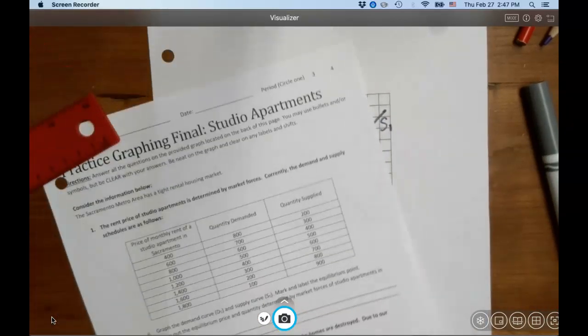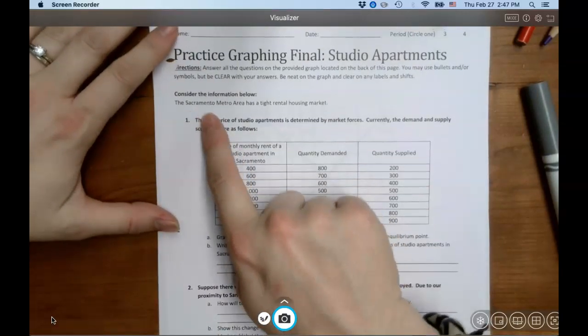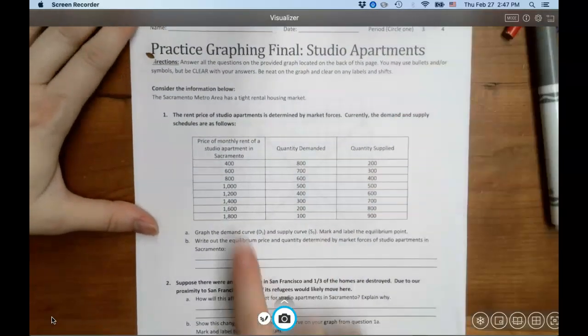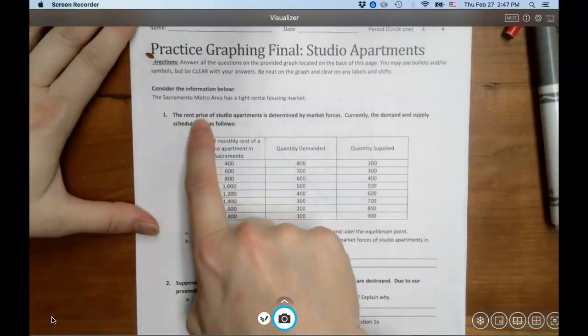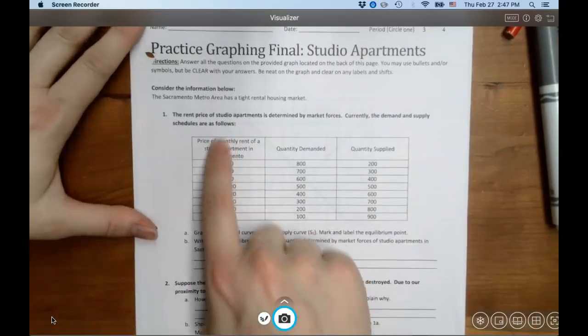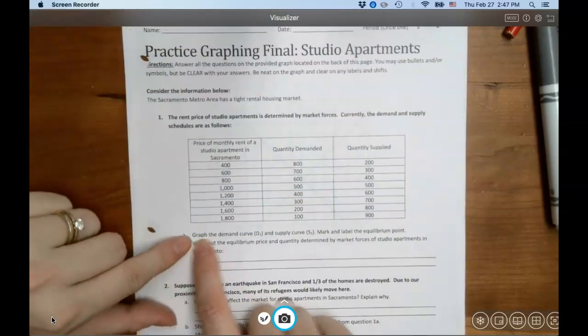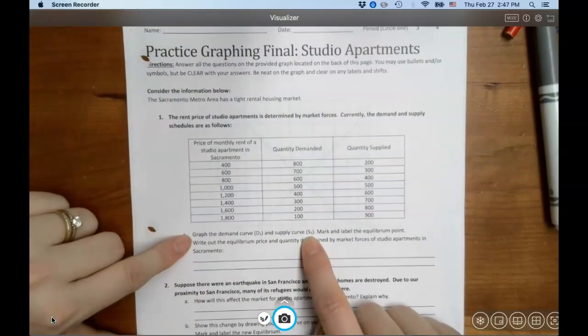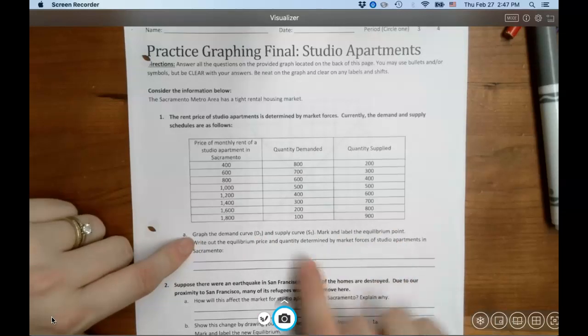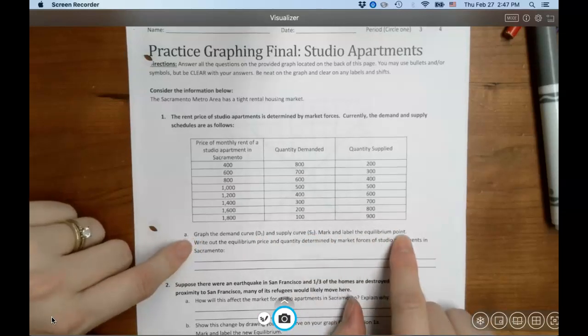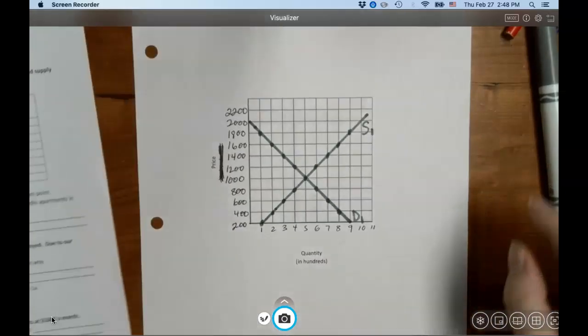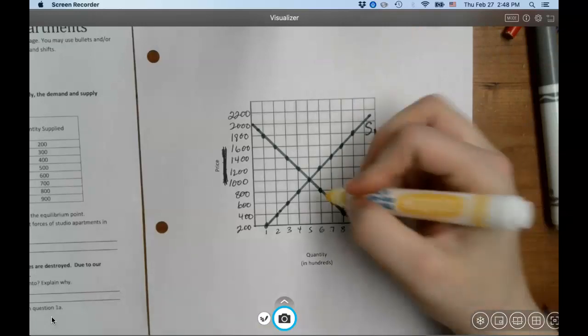All right, now let's take a look at what's going on here. Make sure you read the scenario very carefully, otherwise you could get lost in the final graphing. So the rent price of studio apartments is determined by market forces. Currently the demand and supply are as follows. We graph this. Now, graph the demand curve and the supply curve. We did that. Now here's the tricky thing with the quiz. Sometimes there's several different directions on the same line. This next bit of directions, you might not notice it if you don't read everything carefully. Mark and label the equilibrium point. So I'm going to do that on mine. Maybe you should go ahead and do that on yours.